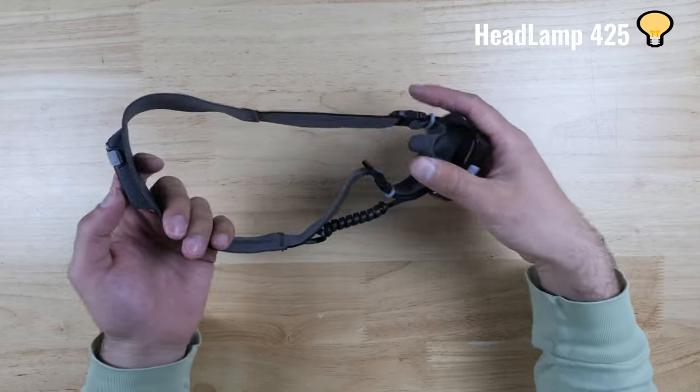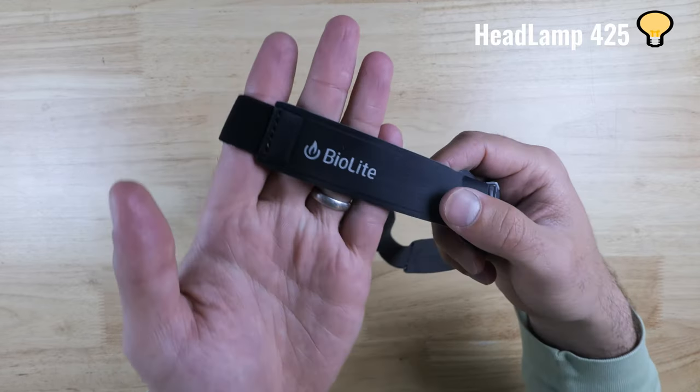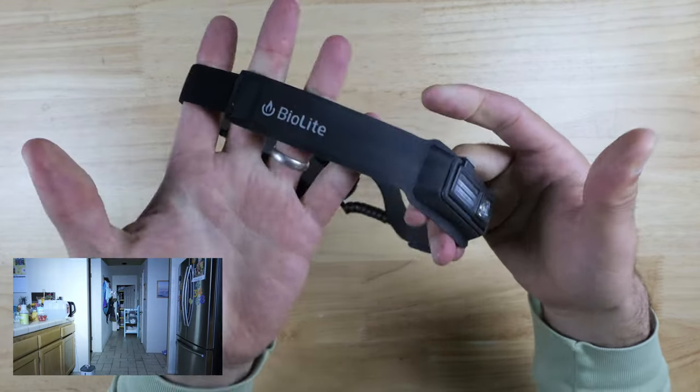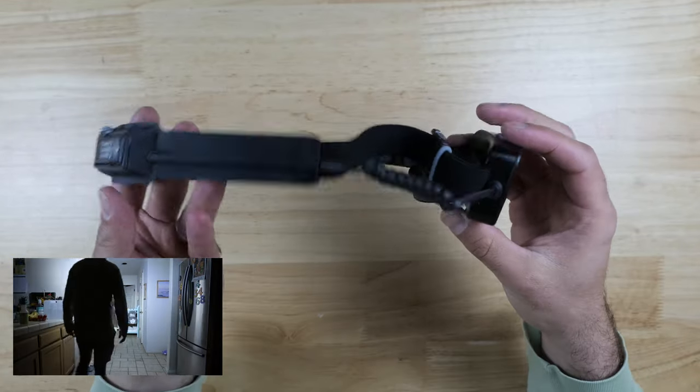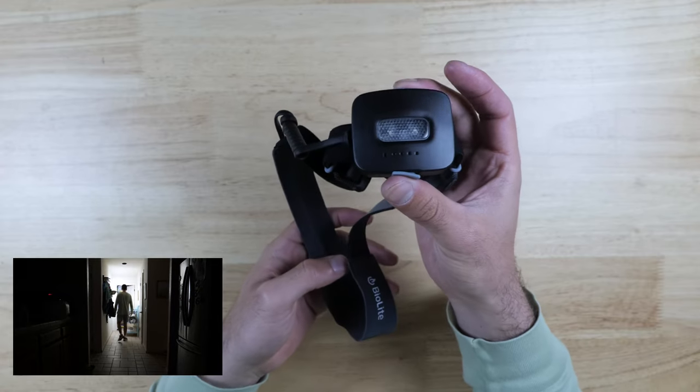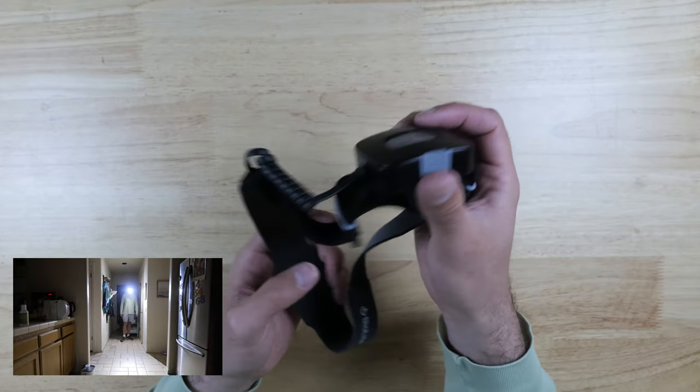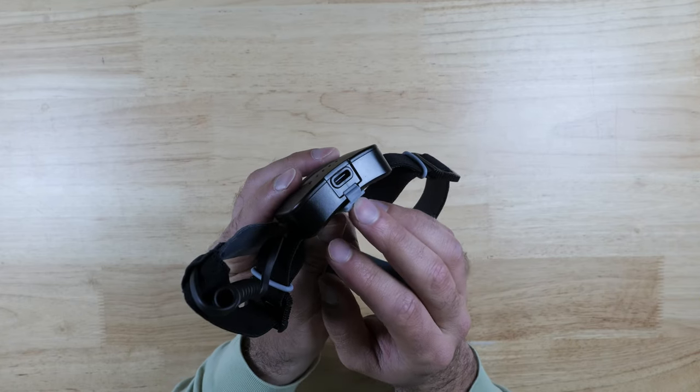The emergency kit also comes with the headlamp 425 and this is a very interesting headlamp that would be useful in many different circumstances. It's got a very comfortable stretchy headband and there's a few different emitters on the front and a mode selector button and on the back this is where you've got a 1000 milliamp hour built-in battery with USB-C charging and another set of red emitters which would be useful in situations where you might want to make yourself more visible.